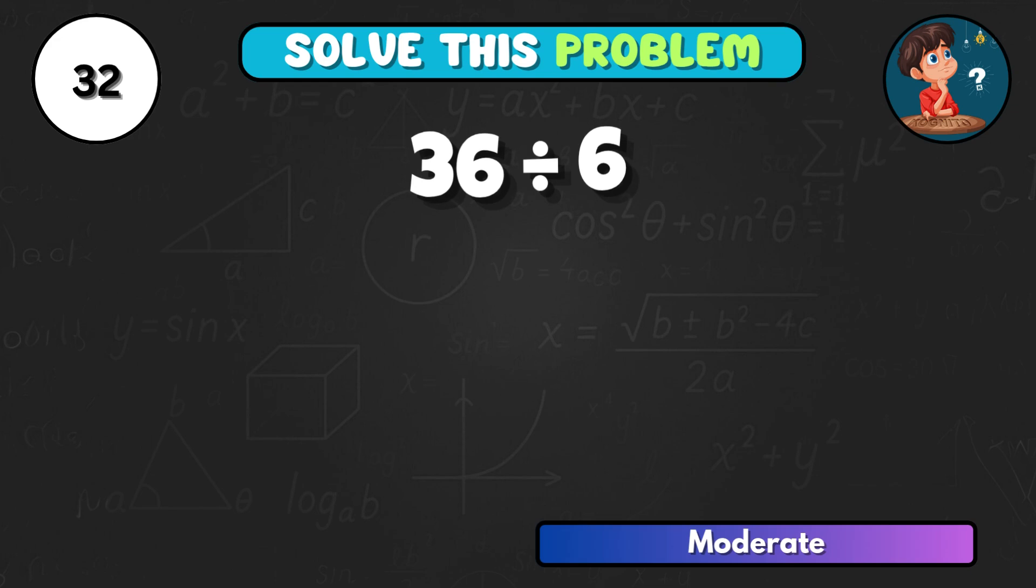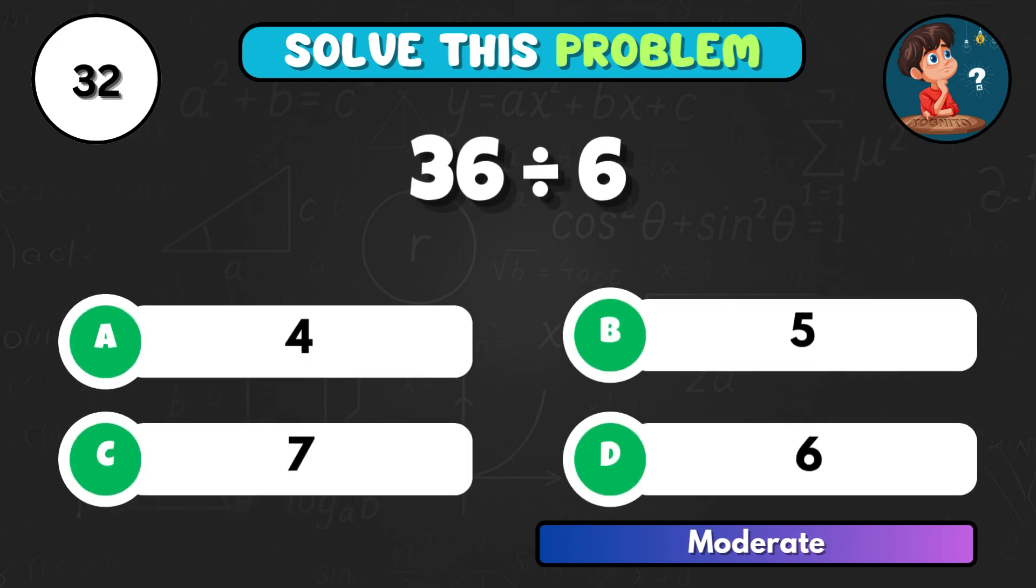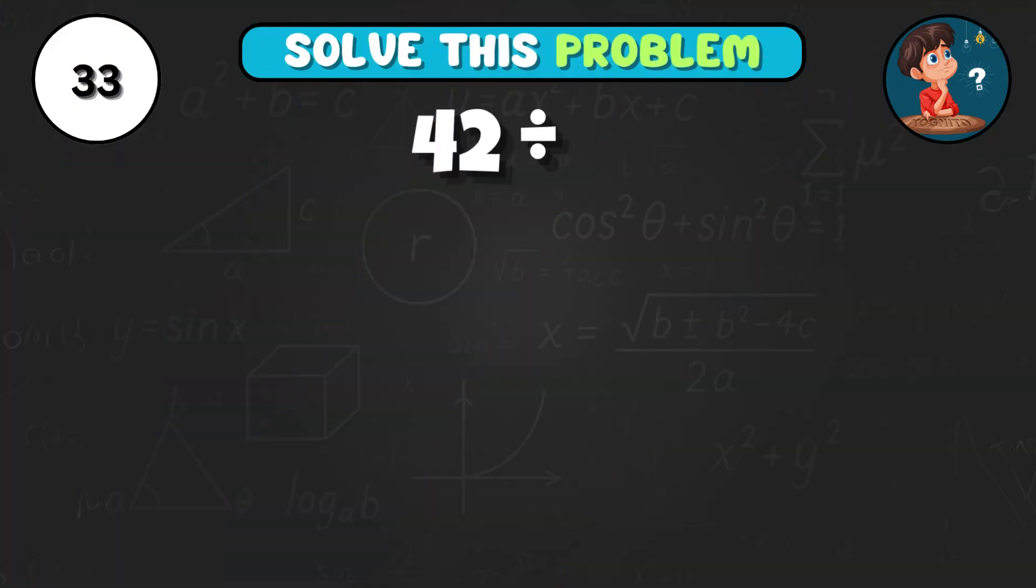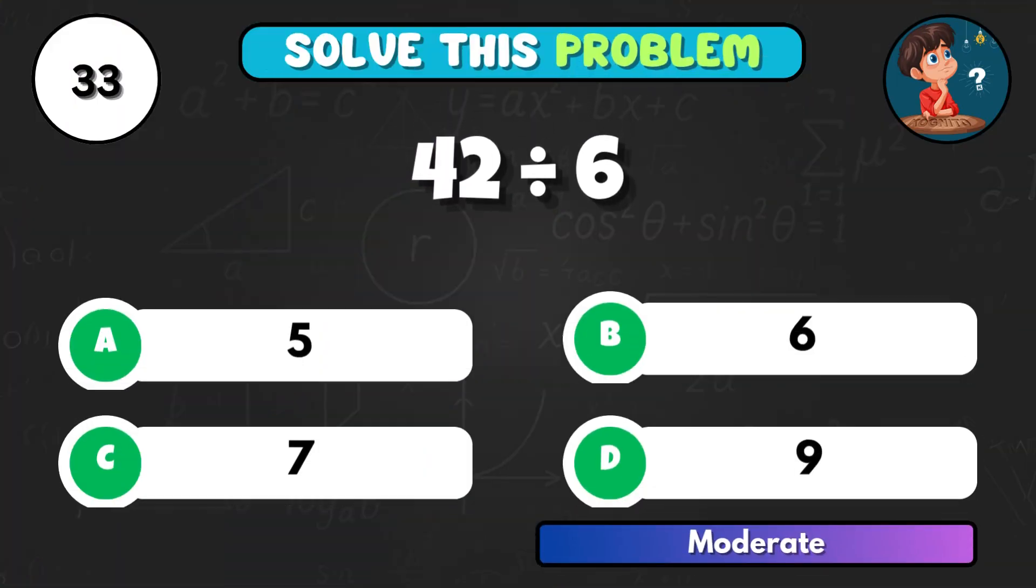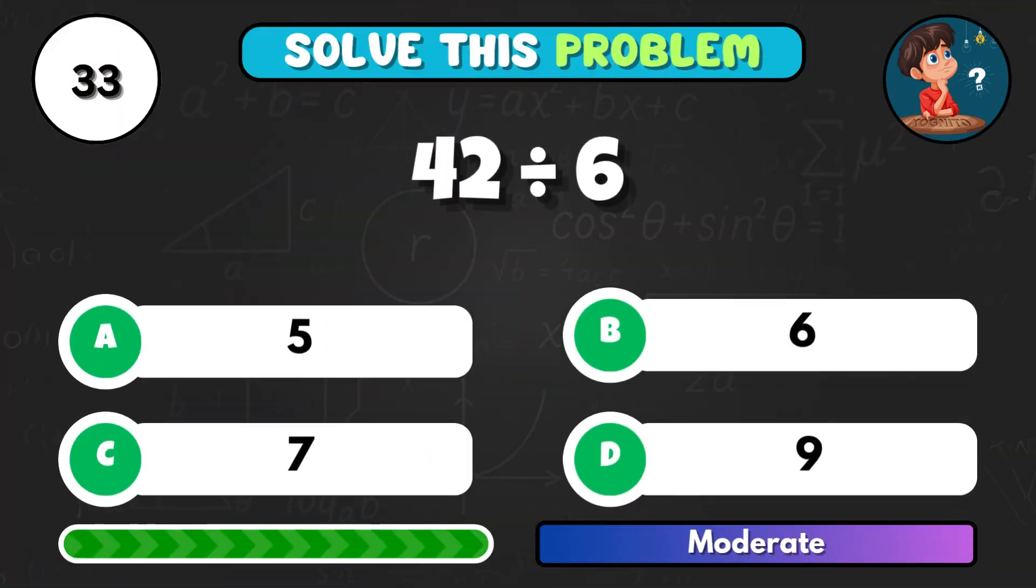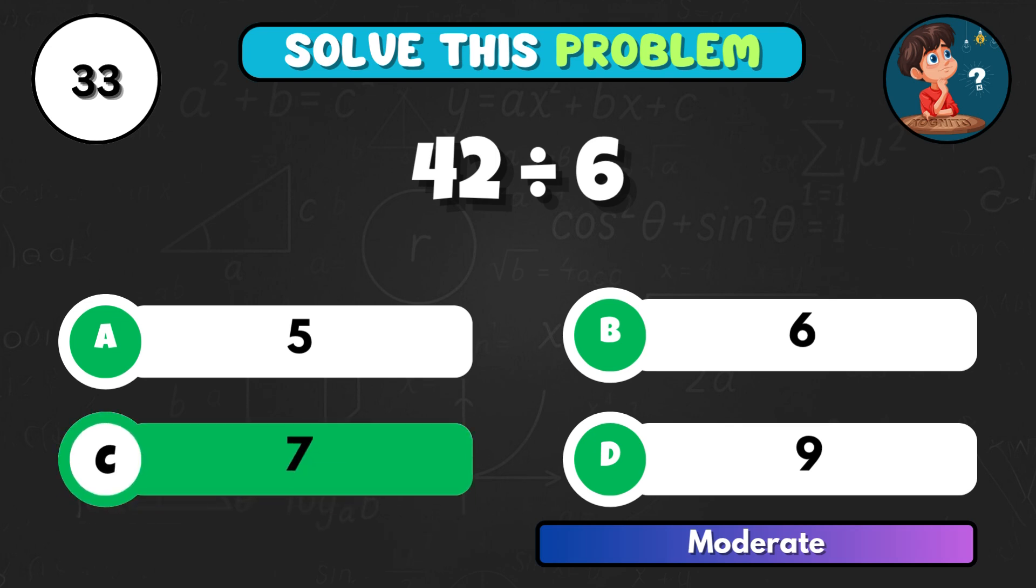Let's go bigger, 36 divided by 6. The right choice is D equals 6. 42 divided by 6, what's your result? Option C equals 7.